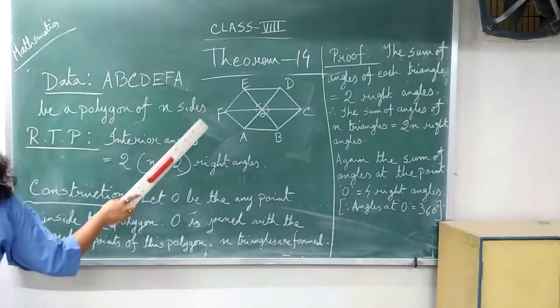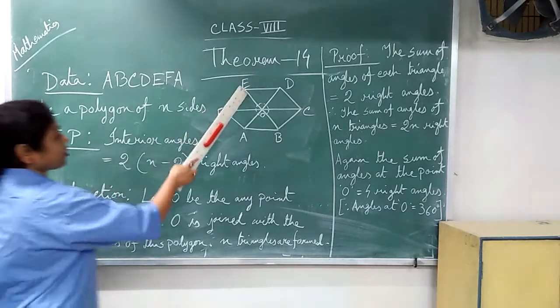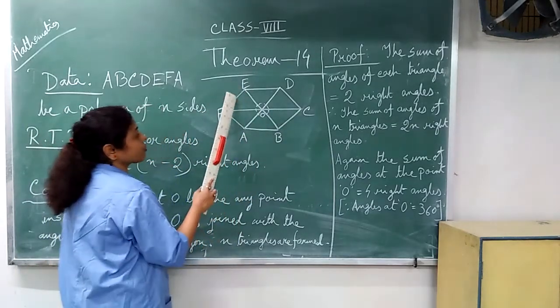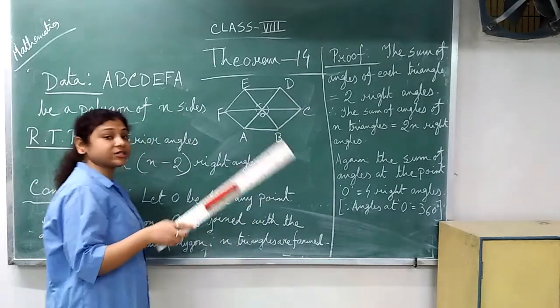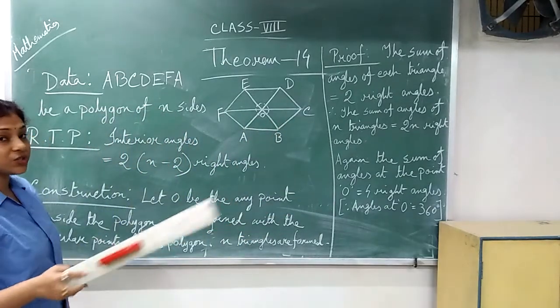This is the polygon. I have drawn the polygon. Obviously, the sum of the interior angles of this polygon you have to prove is equal to 2 into n minus 2 right angles.